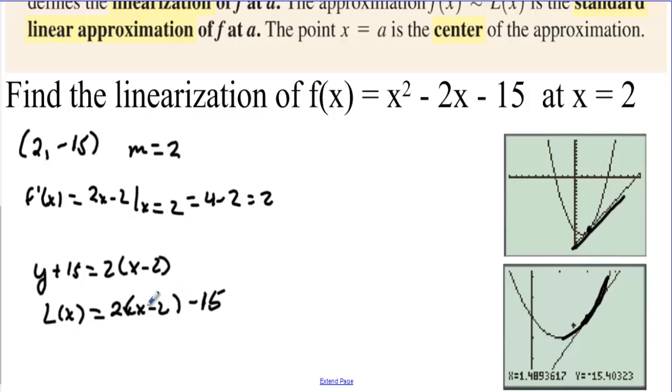And we could find the slope intercept form of this, of course, so we have 2x minus 4 minus 15, so the linearization is 2x minus 19. Now, we're saying that this curve is represented by the line 2x minus 19 as long as you stay really close to 2.